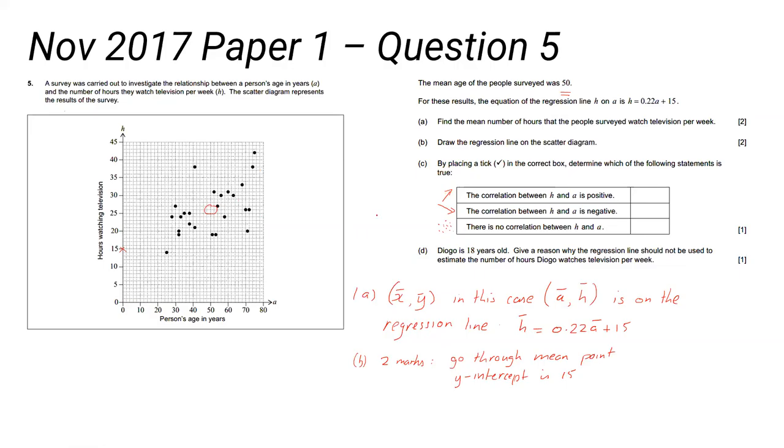This person here is 18 years old. Give a reason why the regression line should not be used to estimate the number of hours this person watches television per week. The conditions to be able to use a regression line are the following. There are three. You must have strong correlation. If you don't have strong correlation, you can't use the regression line. The example I sometimes give is if you were to miss one of your exams and I said I'll give you a grade based on how tall you are. Well, your height and your test scores probably don't correlate very closely, so using your height to estimate your test score wouldn't be a fair thing to do.